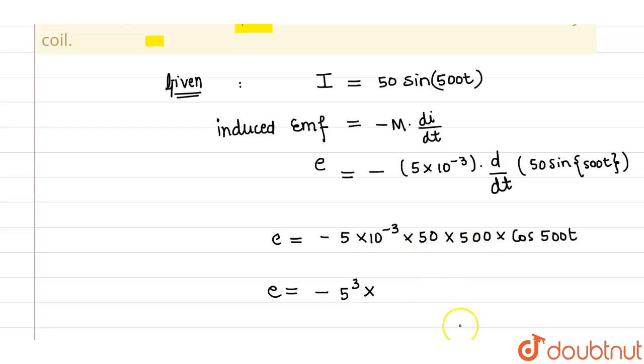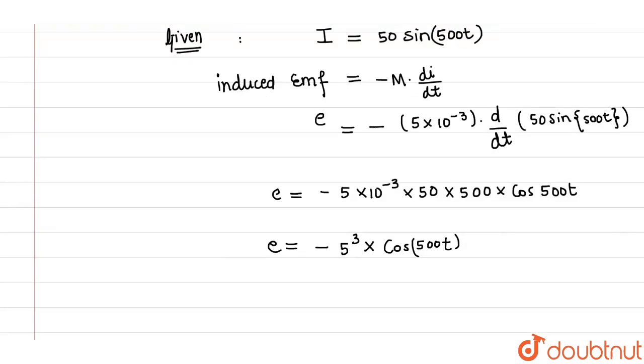So for the peak, the peak value of induced EMF will come out to be 5 raised to power 3, which can be written as 25 into 5, that means 125 volt. This is the value of peak value of induced EMF, 125 volts.